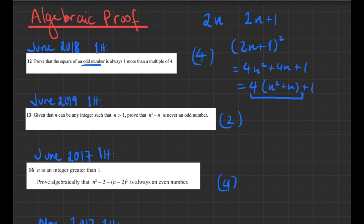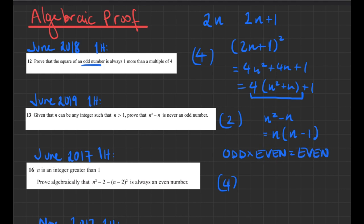Question 13 from 2019: given that n can be any integer greater than 1, prove that n² − n is never odd. Factorise: n² − n = n(n − 1). You need to know that multiplying an odd and an even number always gives an even result. If n is even, n − 1 is odd; if n is odd, n − 1 is even. Either way, n(n − 1) is always even.